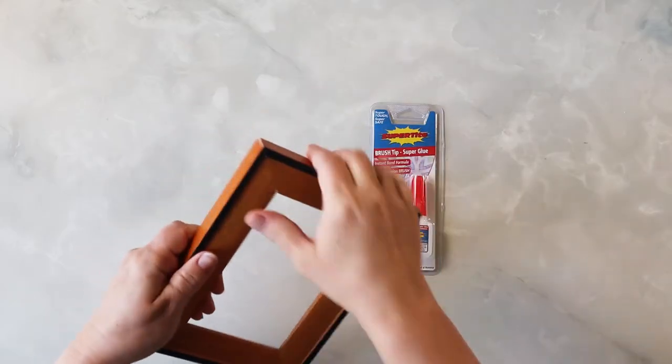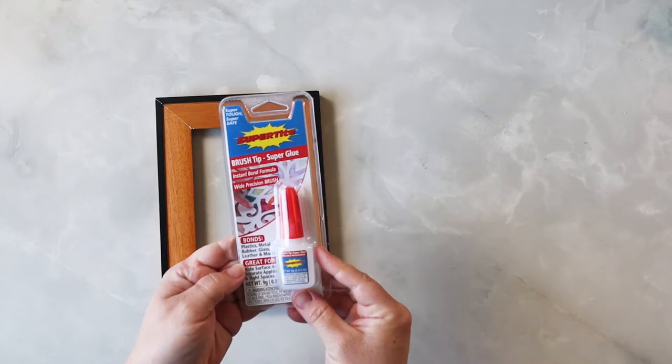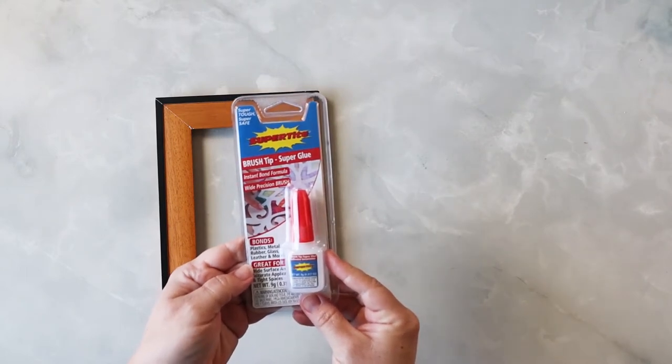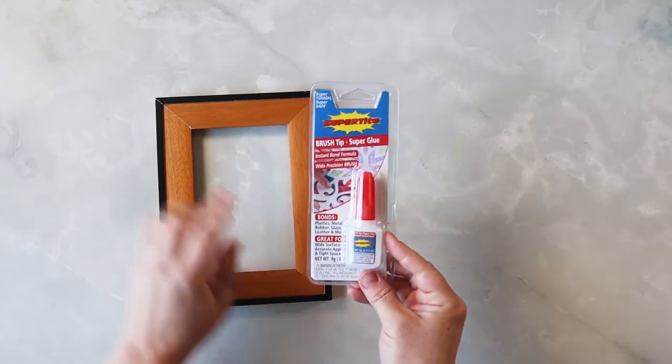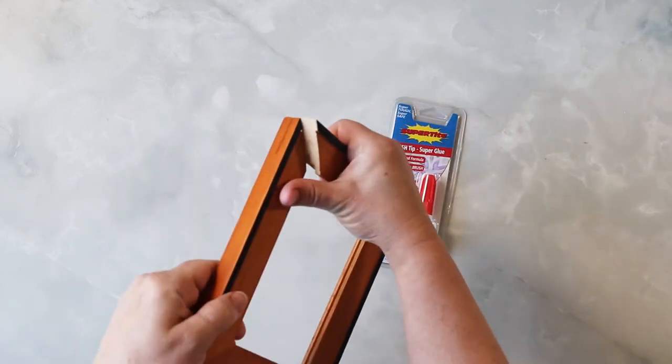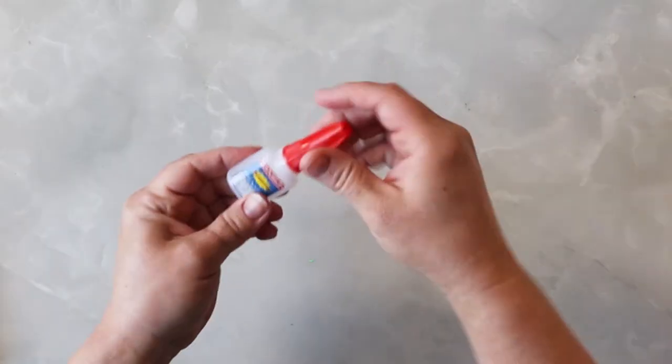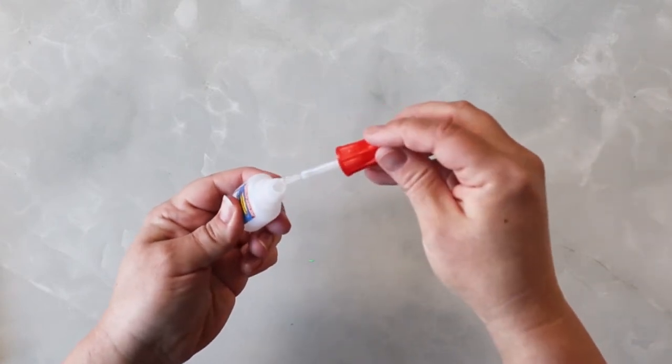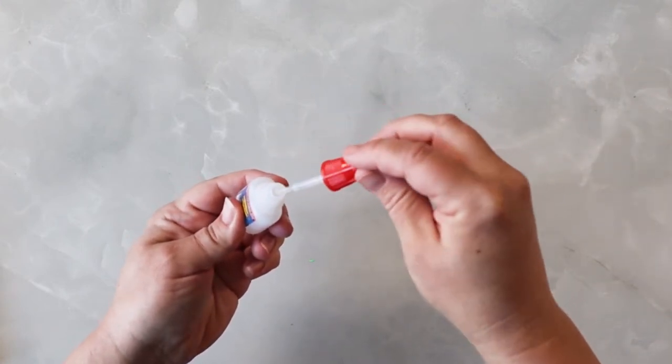So this frame dropped and it got cracked. I'm going to use SuperTite Super Glue with a brush tip application, which is great because I need to get into these very small, tight spaces to apply a thin layer of glue to fix this frame. So here you can see the glue, it opens up and it has a nice brush applicator.